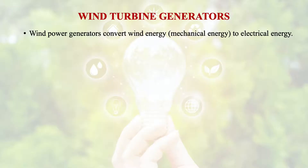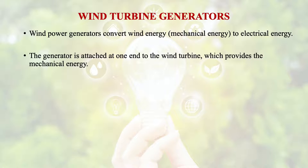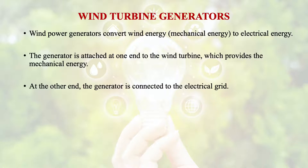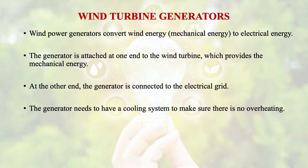Wind turbine generators are the machines — the conversion devices — which convert wind energy to electrical energy. This generator is attached at one end of the wind turbine which provides the mechanical energy, and at the other end the generator is connected to the electrical grid. The generator needs a cooling system to make sure there is no overheating. Generally, two kinds of generators are there: small generators and large generators, depending on the power requirement or application.